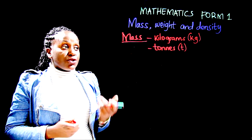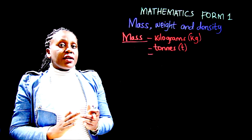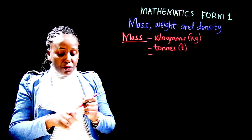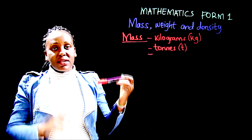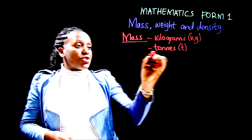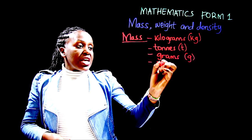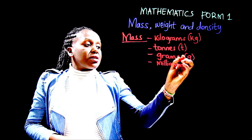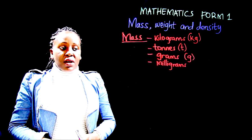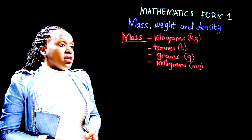Now we'll highlight all the units we use. Kilograms is the standard one. For smaller masses — for instance, if you weigh this pen it may not reach one kilogram — masses less than one kilogram can be expressed in grams. The other unit we use is milligrams, used to measure very small quantities such as tablets of medicine. Milligrams is written as small m, small g.